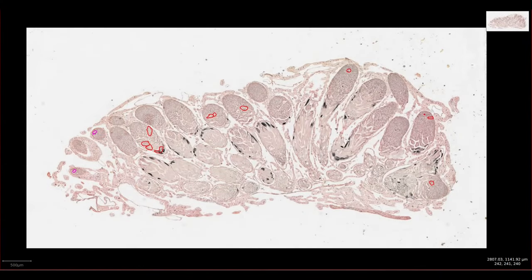Hello and welcome to Down the Scope. Today we're going to have a look at a section of testis from a grasshopper. If you want to have a look at the slide yourself and find the different structures and cells, you can access a digital copy at downthescope.co.uk. A link to the slide is in the video description.